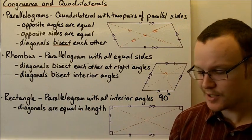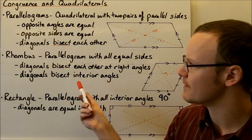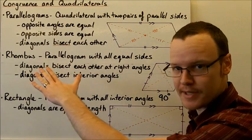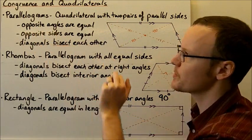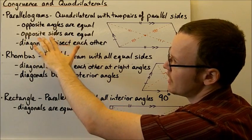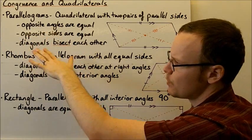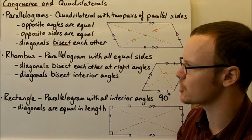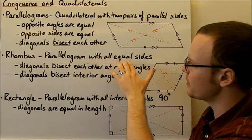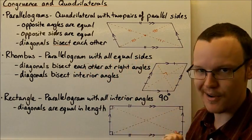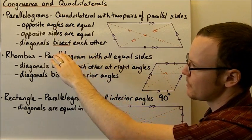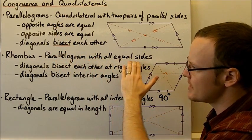Looking at a rhombus — a rhombus is a special parallelogram. So all of the properties that a parallelogram has, a rhombus has too: opposite sides equal, opposite angles equal, and diagonals that bisect each other. But it has a special property in that it has all equal sides. So not only does it have all the properties of a parallelogram, but it also has all sides equal.